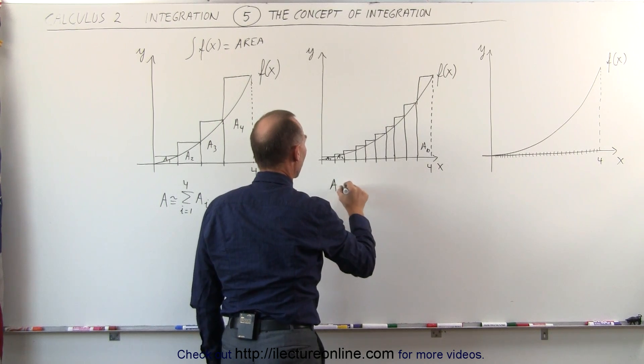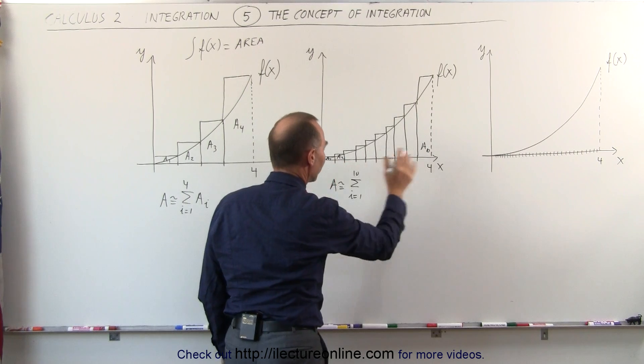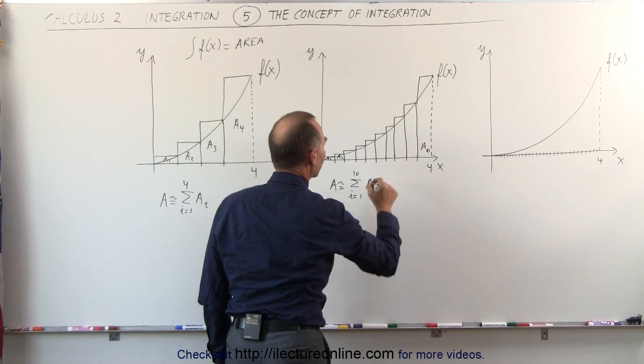And so I can say that when I sum these up, the area is approximately equal to the sum from i equals 1 to 10, because now I have 10 sections of all the a sub i's.